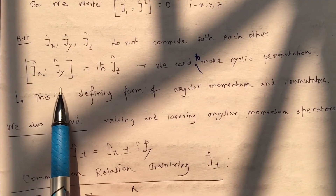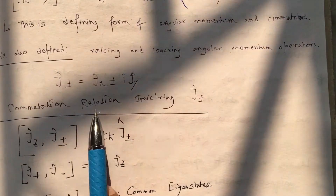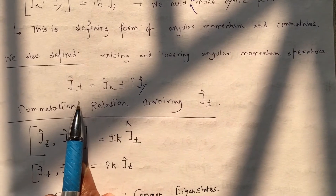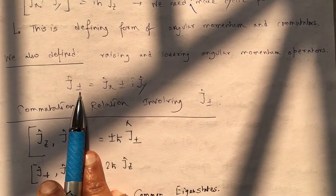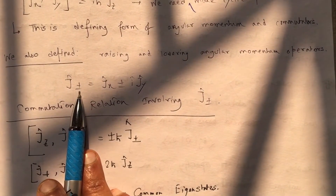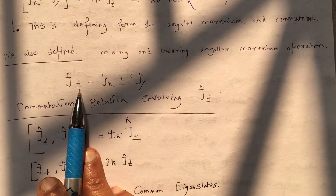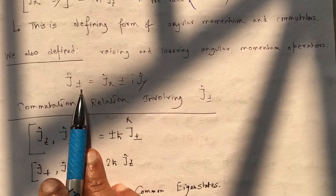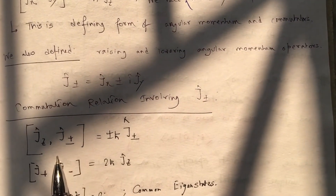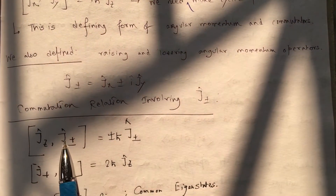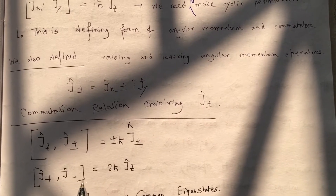We have also defined the raising and lowering operators. These J± operators will increase the value of M by one unit or decrease the value of M by one unit, and they are defined accordingly. This is the commutation relation of Jz with J±, and this is the commutation relation between J+ and J−.